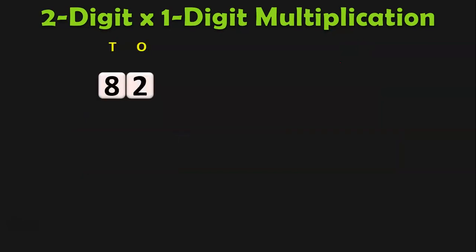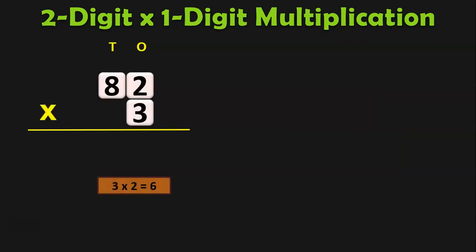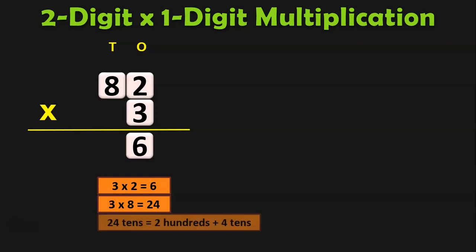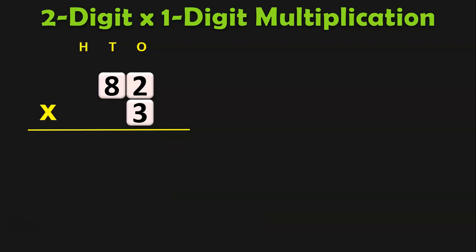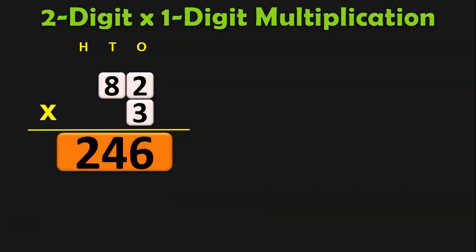Let us see another sum. 82 by 3: 3 into 2 is 6. 3 into 8 is 24, so we have to regroup the tens place. 24 tens is 2 hundreds plus 4 tens, so 4 in the tens place and 2 moves to the hundreds place. The product is 246.